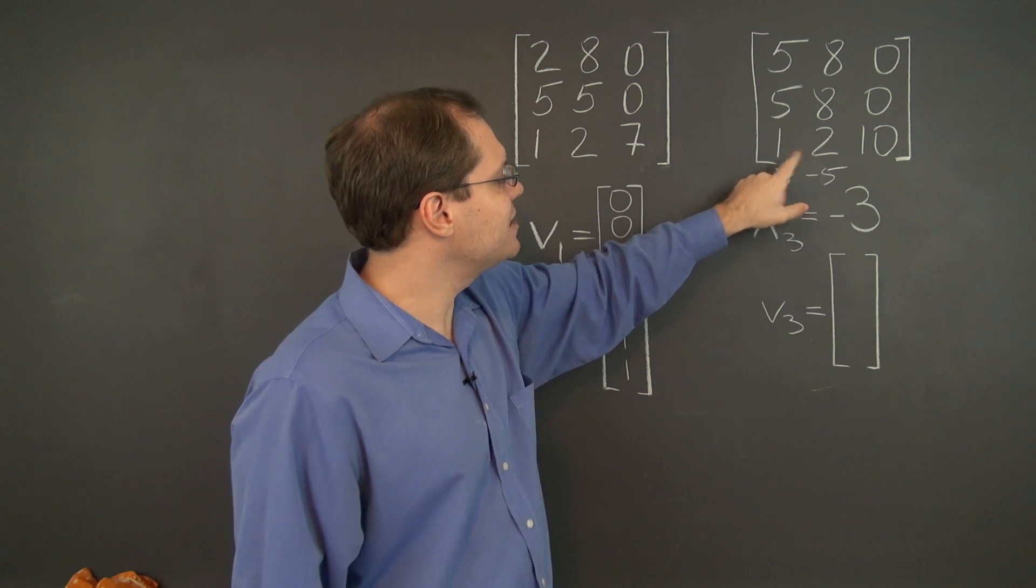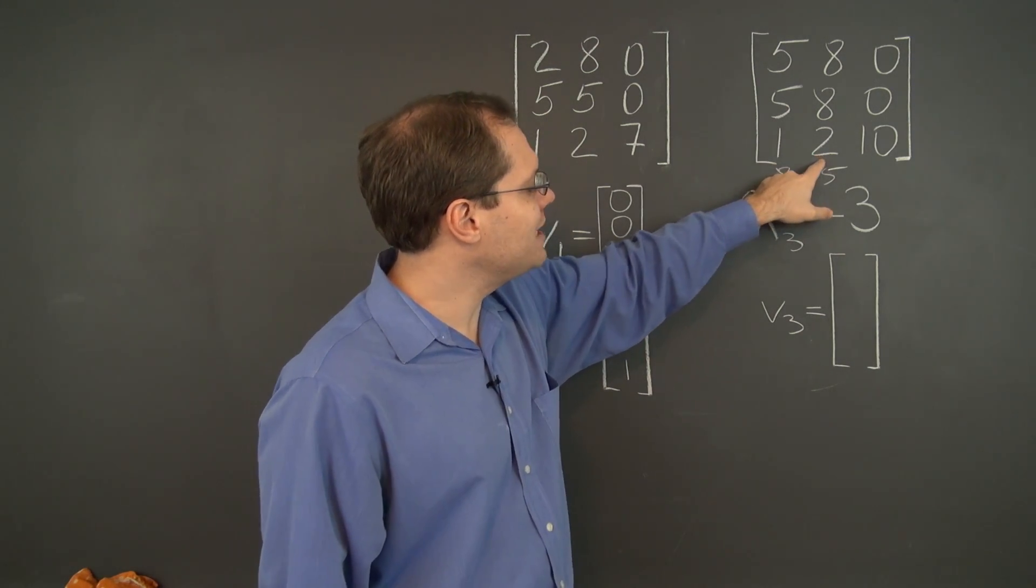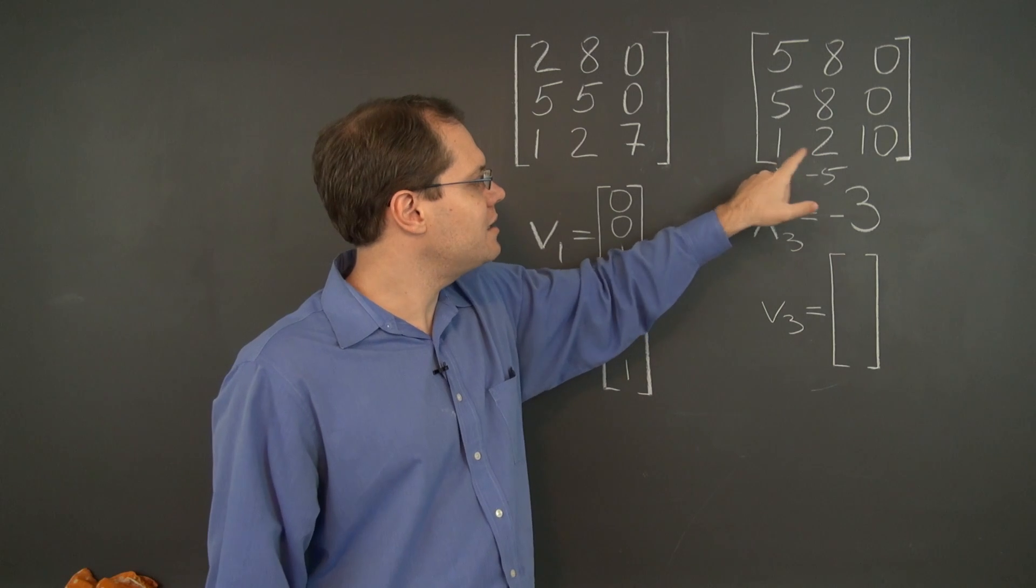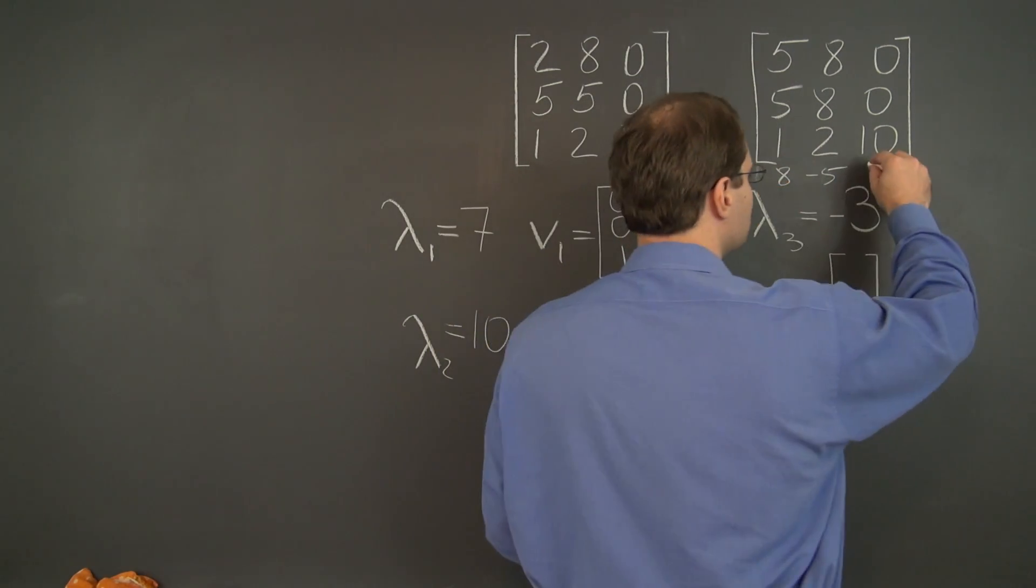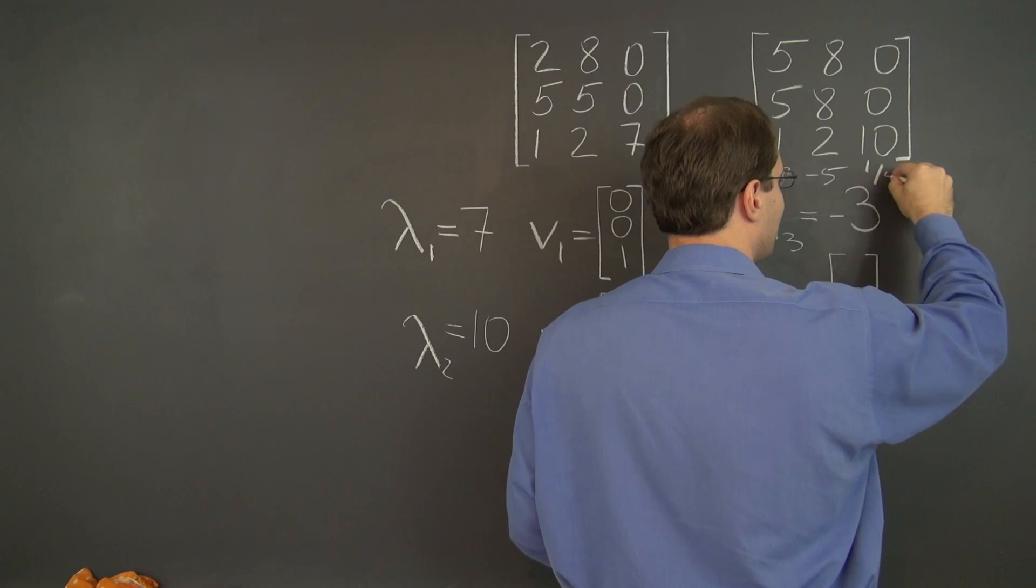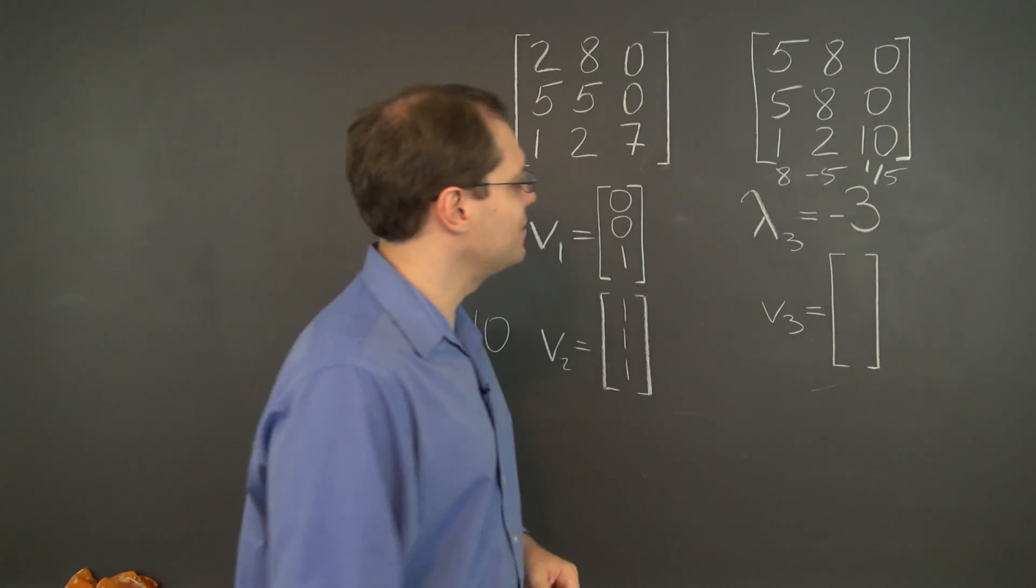And then in this entry we have 8 minus 10, that's negative 2, so we have to take 1 fifth of this one.